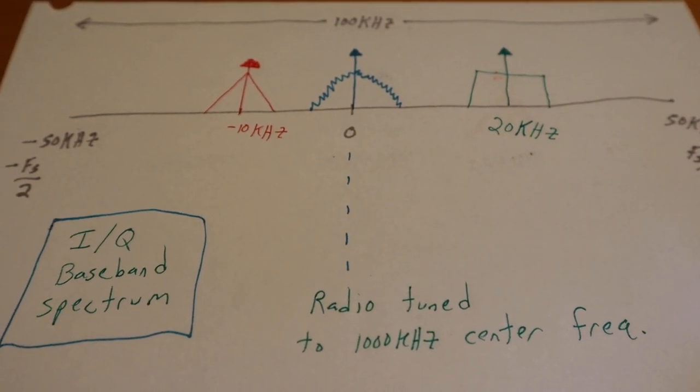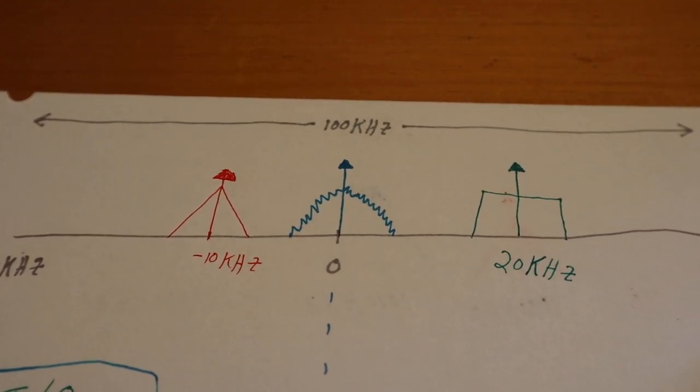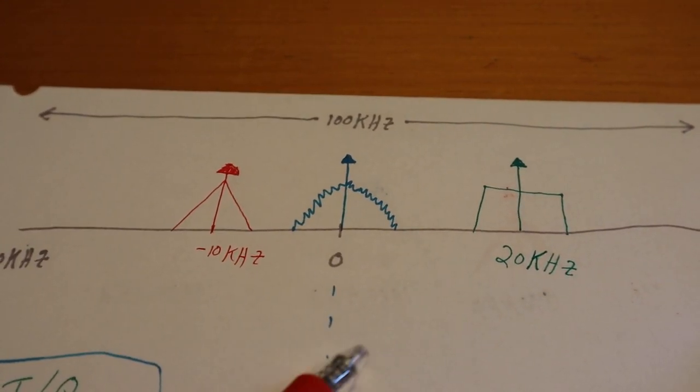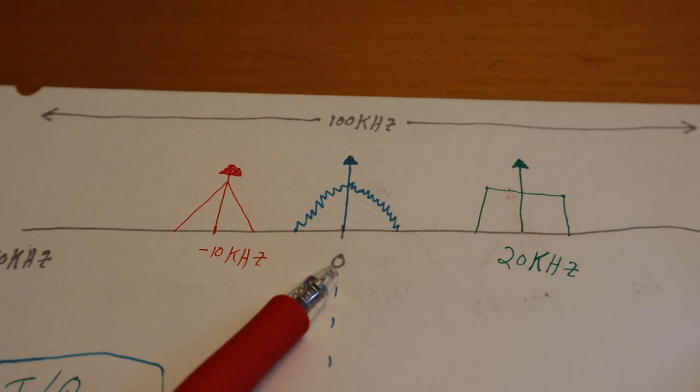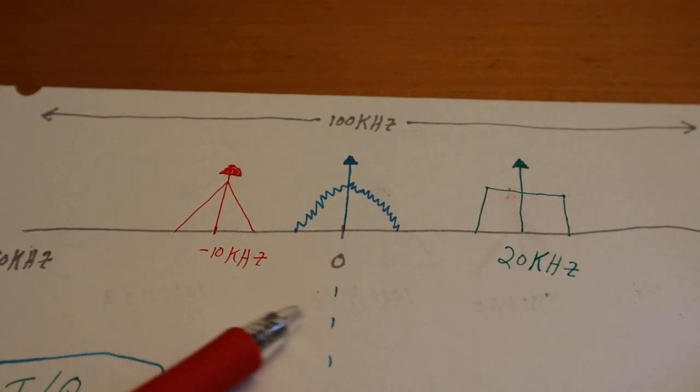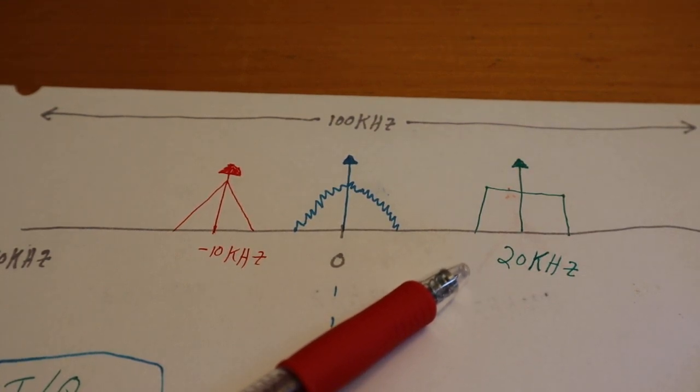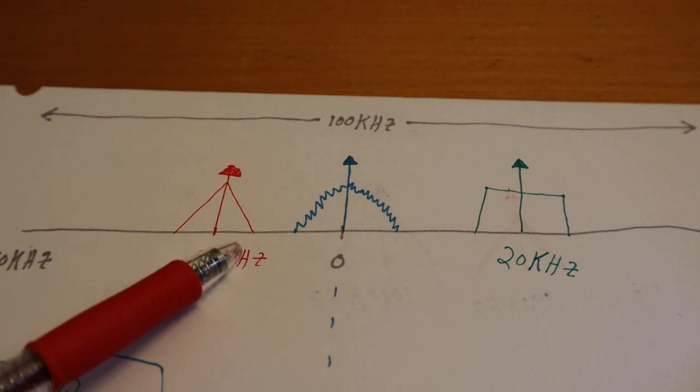Remember, you tuned your radio to 1000 kilohertz, so what's really coming into your SDR is the first station is at zero or DC, this guy's at minus 10 kilohertz, and this other guy is at 20 kilohertz.